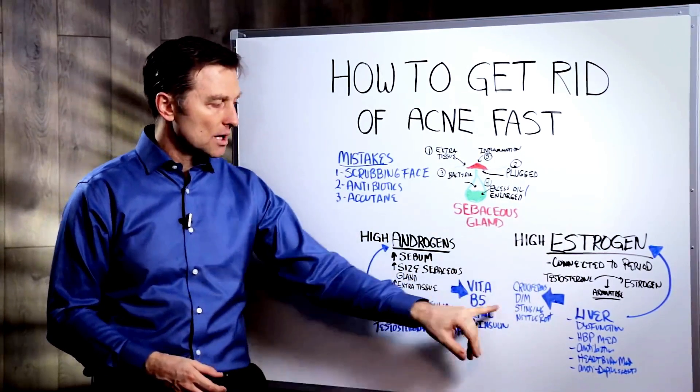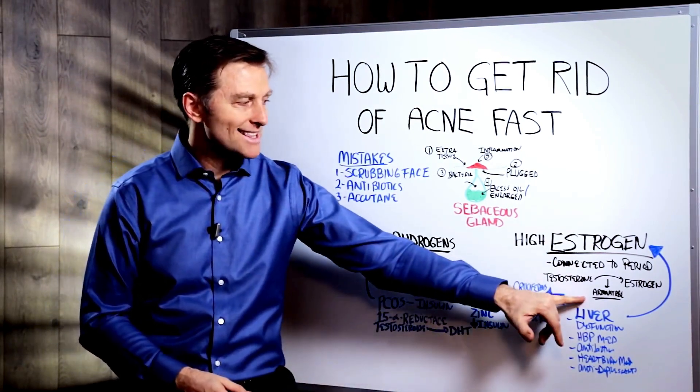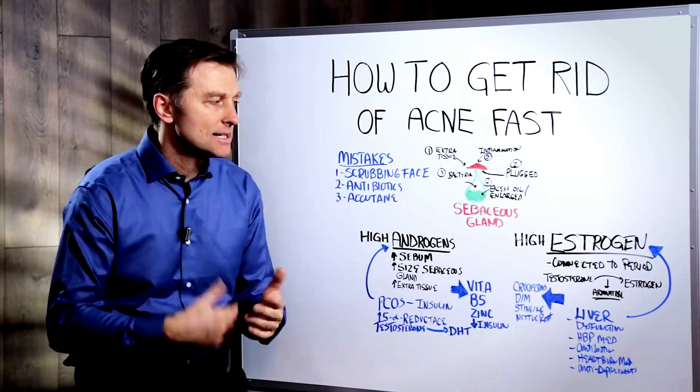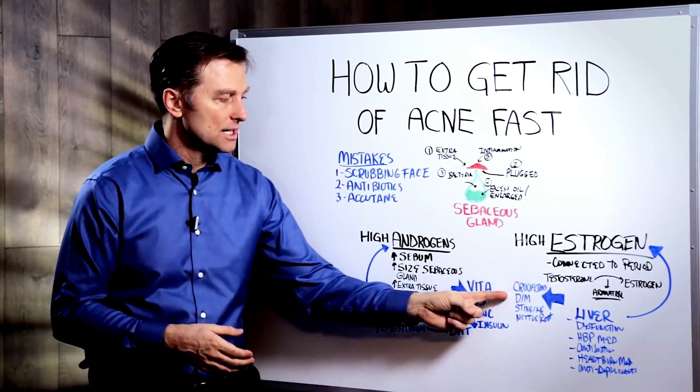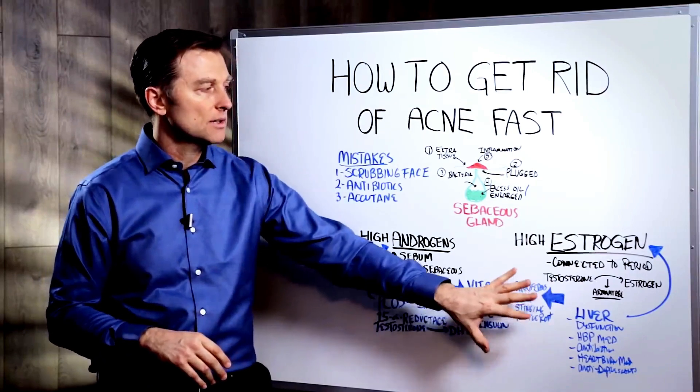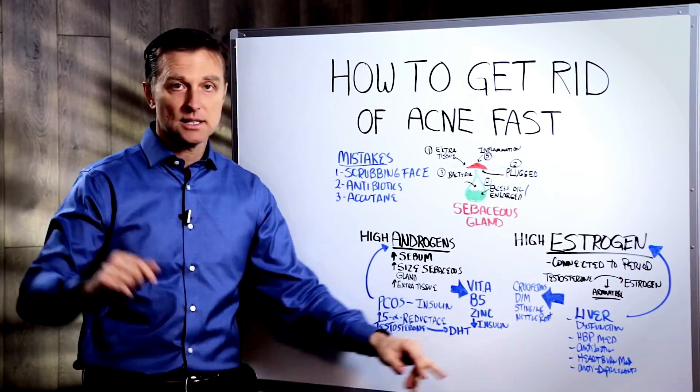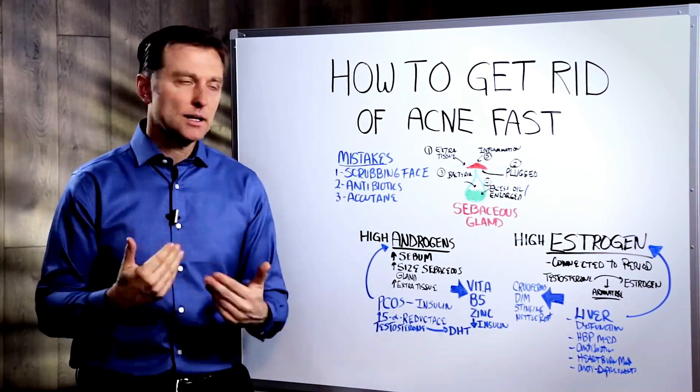And then the last thing I want to talk about is stinging nettle root. That is a plant that will also lower this enzyme and clean up the excess estrogen in your body. So we got cruciferous, DIM, or either or, or in stinging nettle root. That's really good for the liver. Of course, apply the information on insulin, which I'm going to put the link below. Again, there's a lot of information in this video. You can go back and research it.